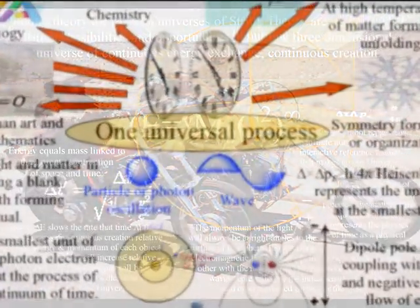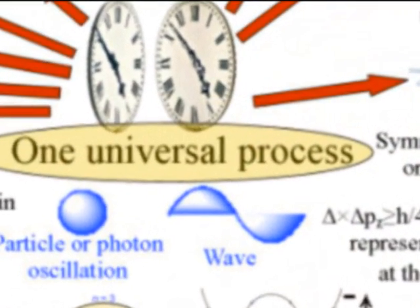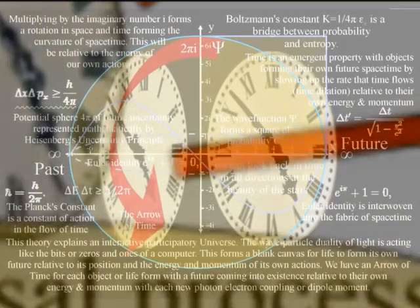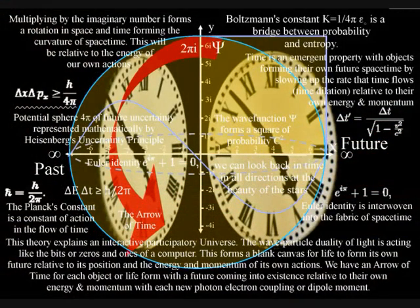We are now on the part of the diagram that says one universal process. Everything below this part of the diagram is represented by quantum mechanics, with the mathematics of quantum mechanics representing the physics of time as a geometrical process in three-dimensional space.